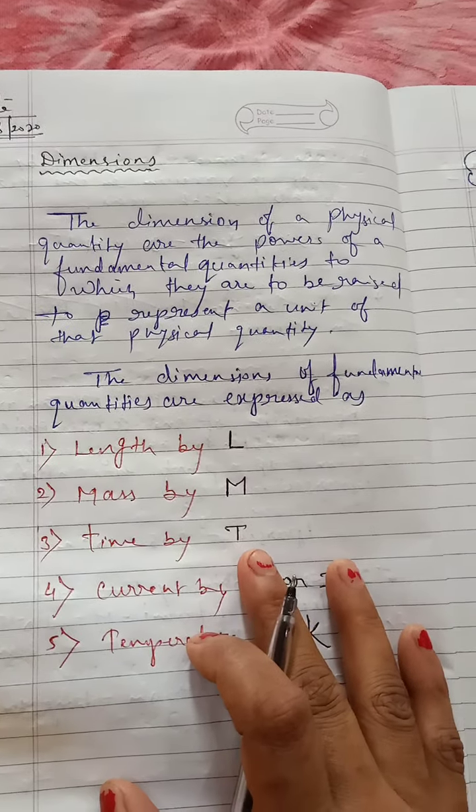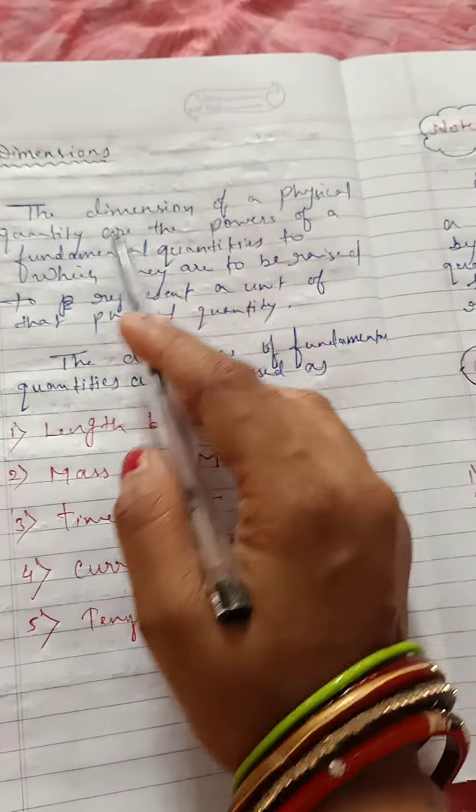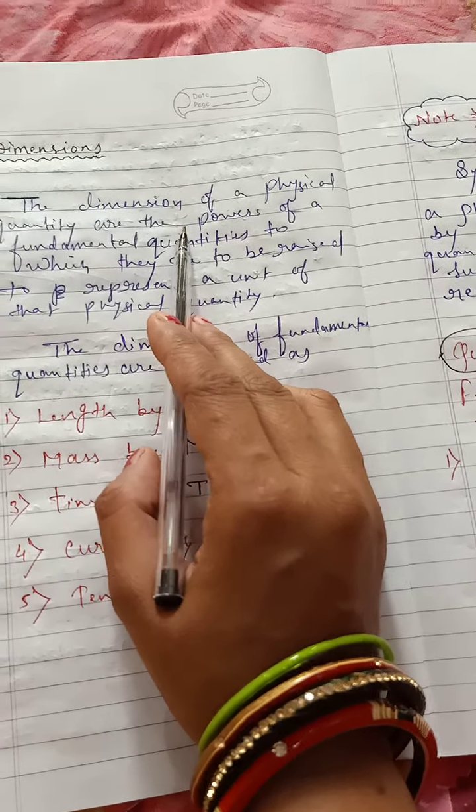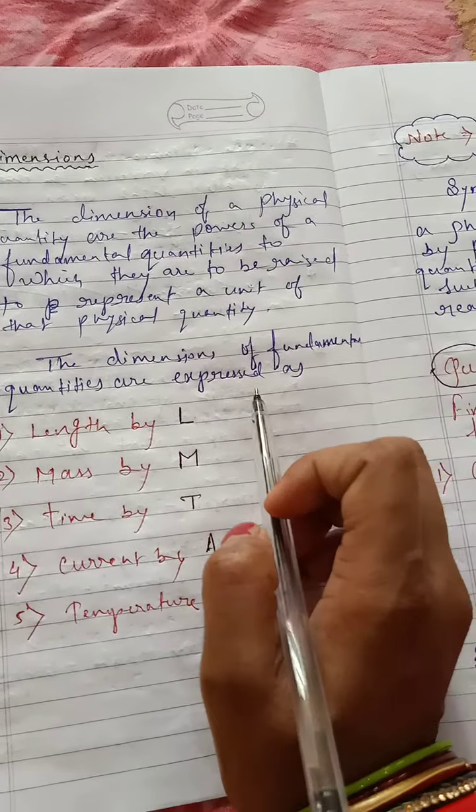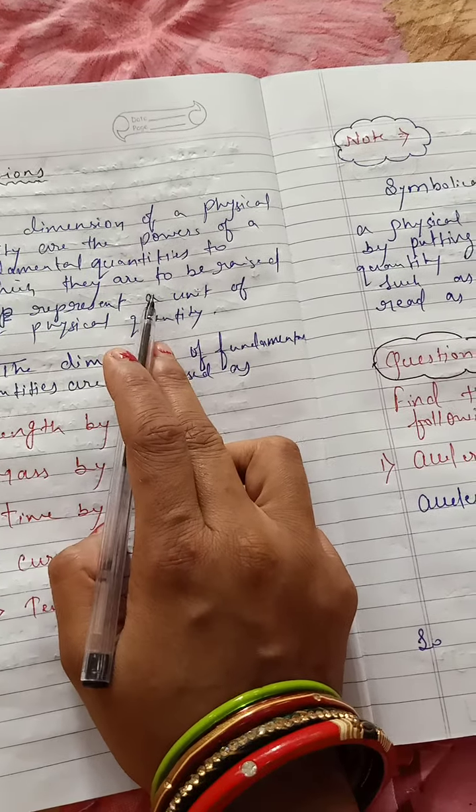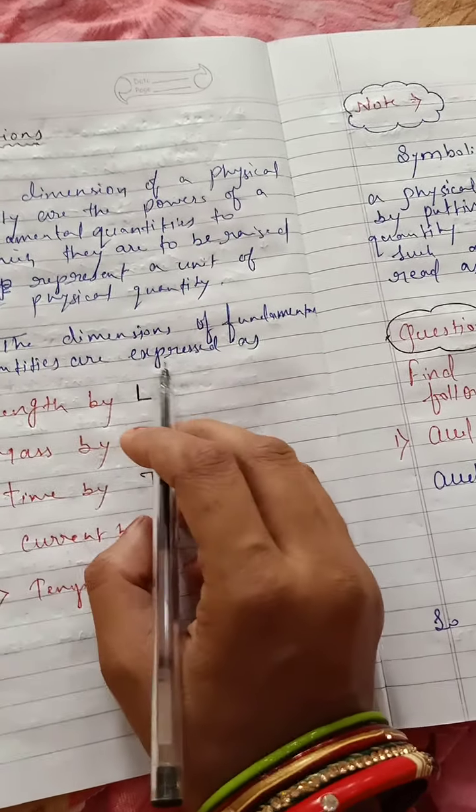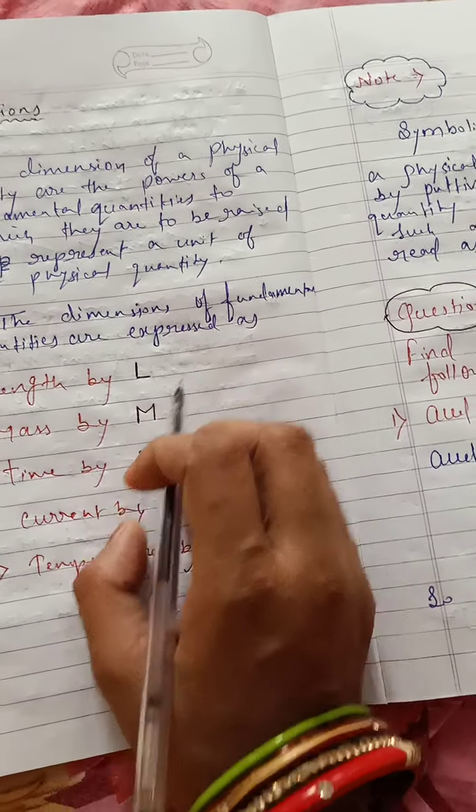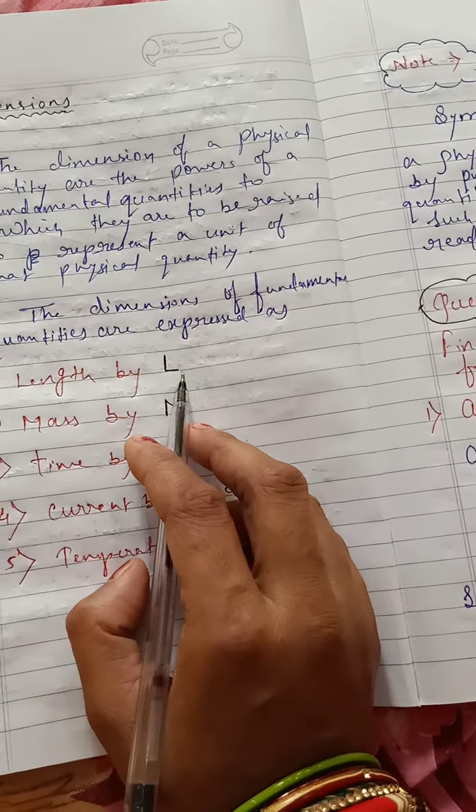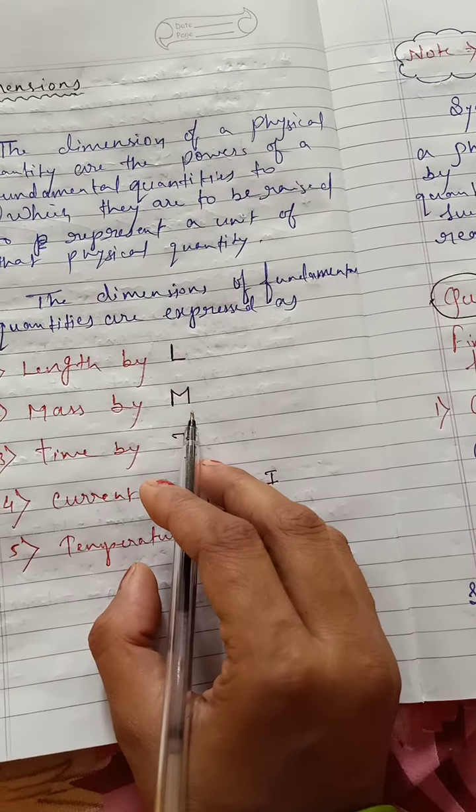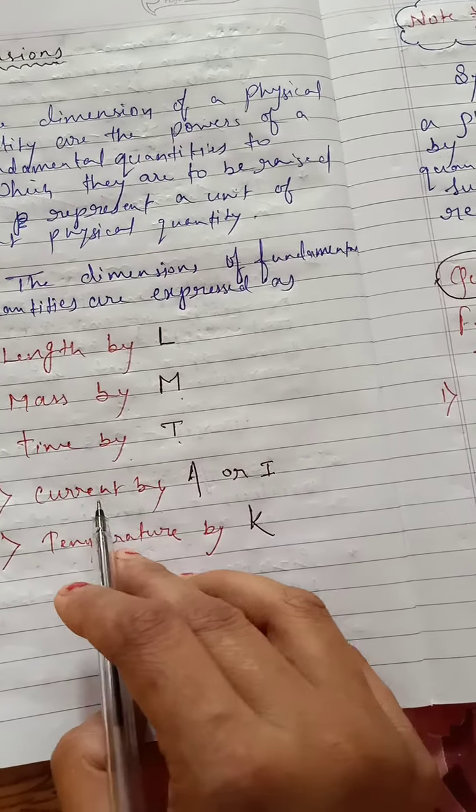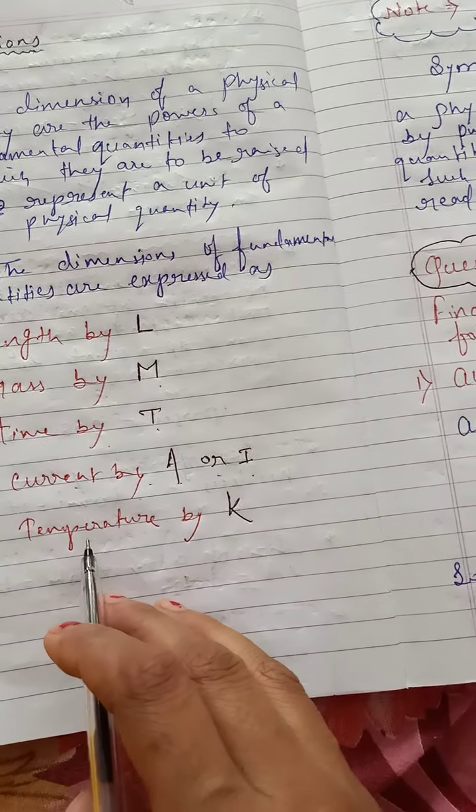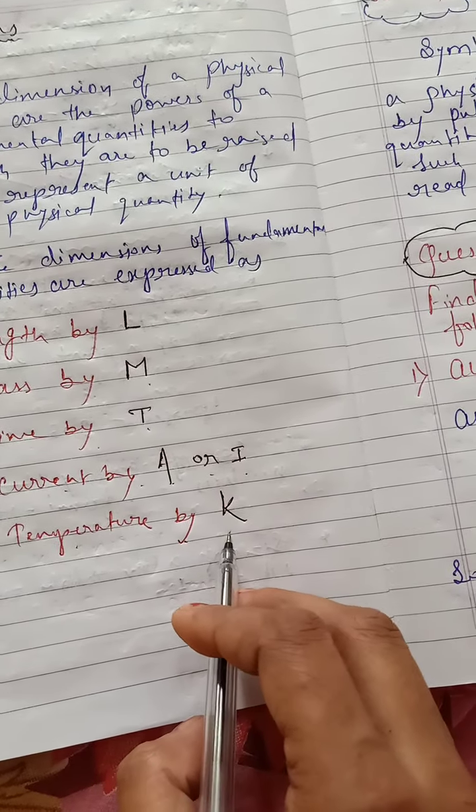Good morning students. Today I am going to explain dimensions. The dimension of a physical quantity is generally represented in square brackets and it is always based on the fundamental quantities. We know that there are seven fundamental quantities. Length is denoted by capital L, mass is denoted by capital M, and time is denoted by capital T. Current is denoted by capital A or capital I, and temperature is denoted by K.